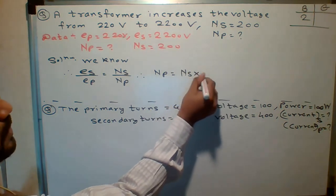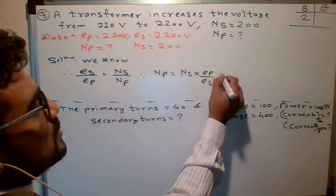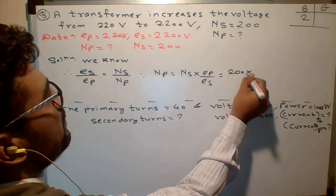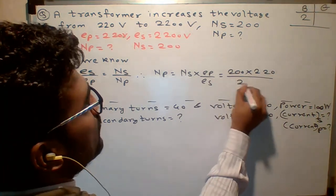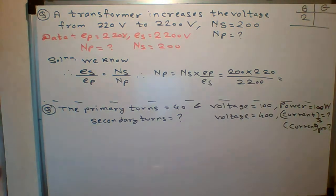NS multiplied by EP upon ES. So NS is how much? 200. EP is how much? 220. And ES is how much? 2200. Who will tell me the answer? Who will tell me the answer? Quick. First, let me tell me, simple calculation is there. Who will tell me the answer?